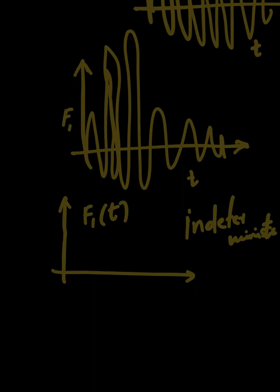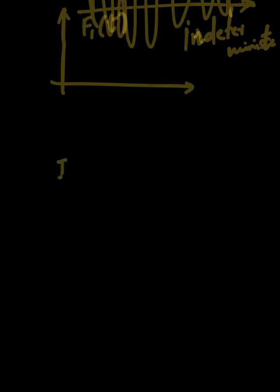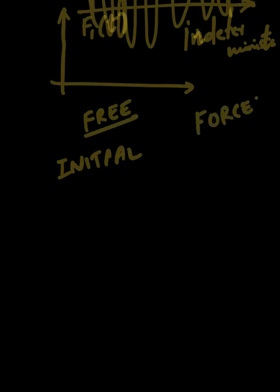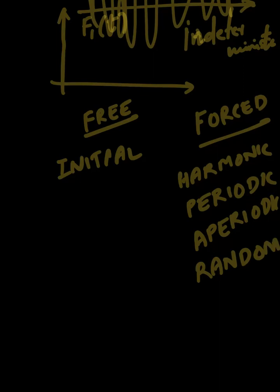To sum up: we have seen initial excitations, which fall in the category of free vibration. In the category of forced vibration, we have seen harmonic excitations, periodic excitations, aperiodic excitations, and finally random excitations. In this course, my focus will be on explaining the response of a structure or system against harmonic and periodic excitations. We have already covered the response to initial disturbances in the earlier set of videos. Thanks for watching.